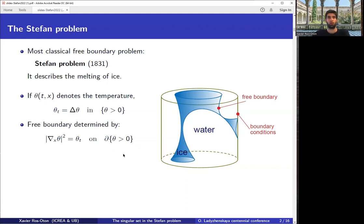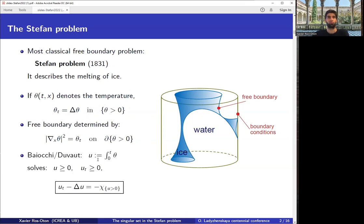To have a complete description of the system, we need the free boundary condition, which is called the Stefan condition. This is how the free boundary is determined. It says that at every instant of time, the speed at which the free boundary melts — the speed at which the ice is melting — is proportional to the gradient in space of the temperature. So the more temperature I have nearby, the faster this will melt. These two equations are sufficient to determine a unique solution.